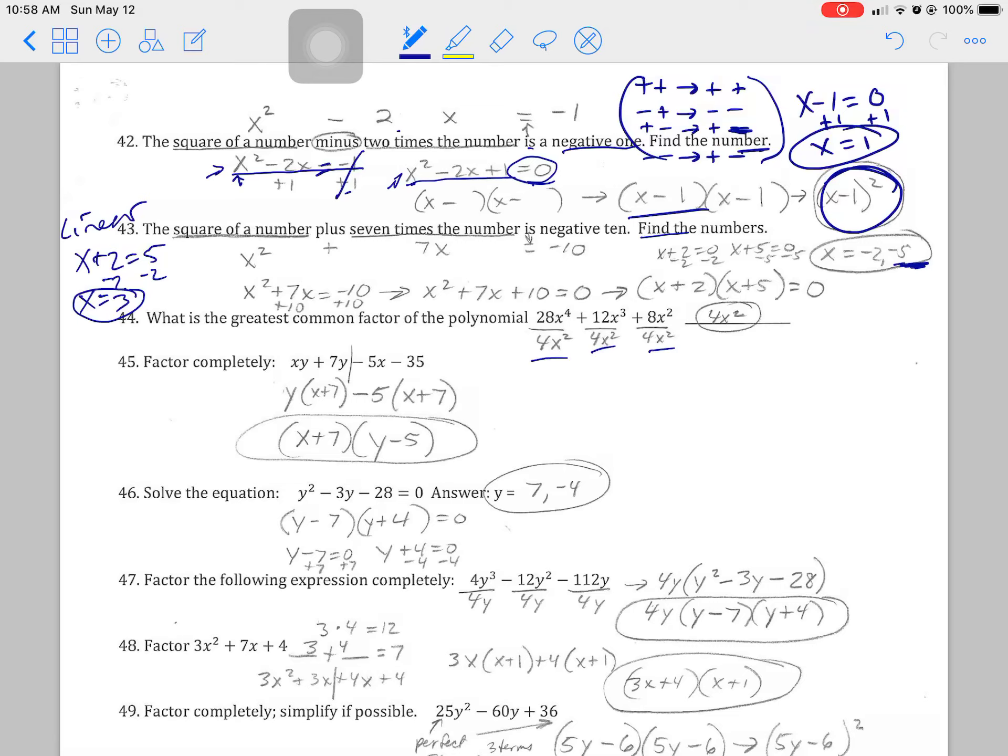All right. This is a 4 term. Number 45 is a 4 term polynomial. We factor those by dividing them in half between the second term and this. Don't forget that this sign goes with this second half here. And we just to. We get the greatest common factor out of the front half. In this case was a y. And we put what's left there.